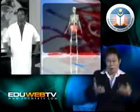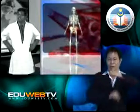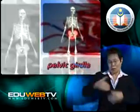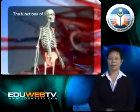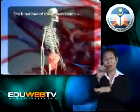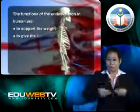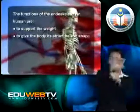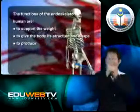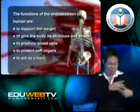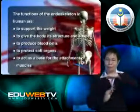The weight of the human being is supported mainly by the pelvic girdle. This is the biggest and strongest bone in the body. The functions of the endoskeleton in humans are to support the weight of the body, to give the body its structure and shape, to produce blood cells, to protect soft organs of the body such as the heart and kidney, and to act as the base for the attachment of muscles.